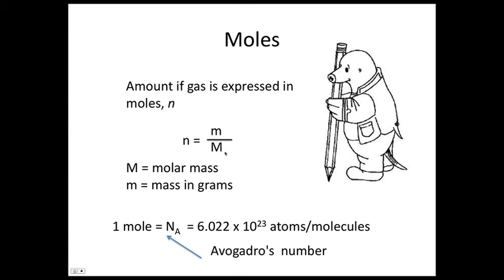So the molar mass will depend on what molecules are making up our sample. In one mole of a material, there are Na, Avogadro's number of particles. So that's 6.022 times 10 to the 23.